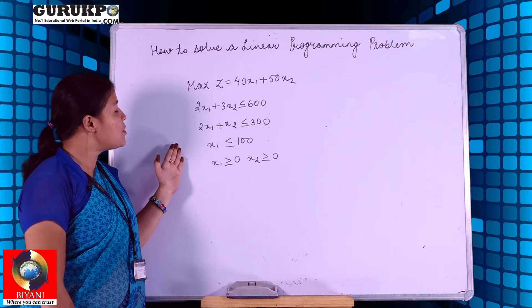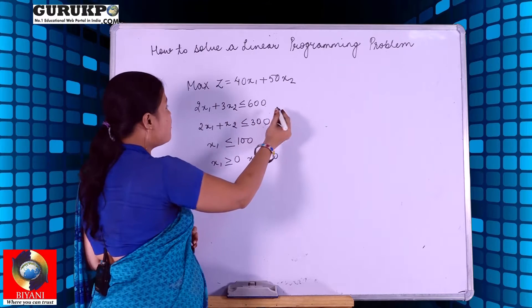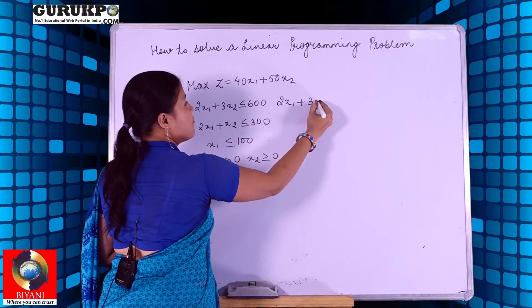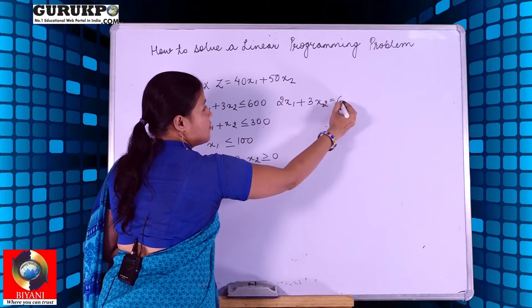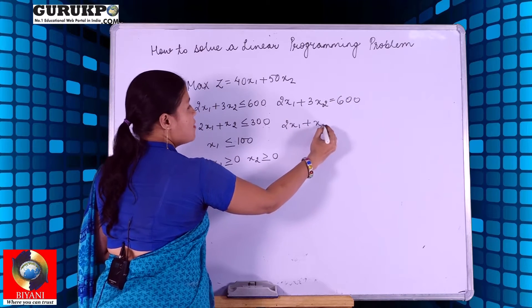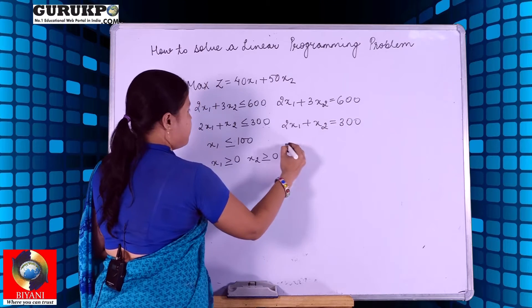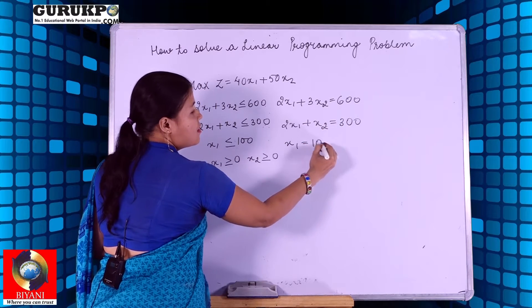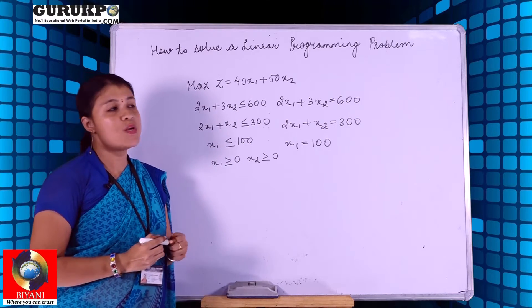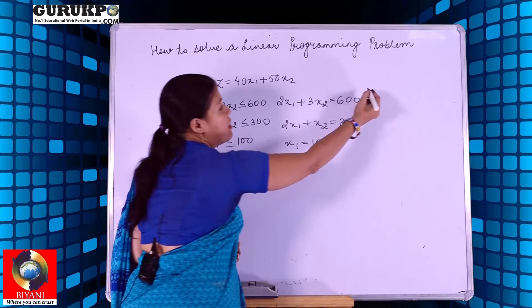To solve a linear programming problem, the first step is to equalize the equations given. We have three equations to work with. After equalizing the equations, we are now going to point out the coordinate points which we are going to plot on the graph.